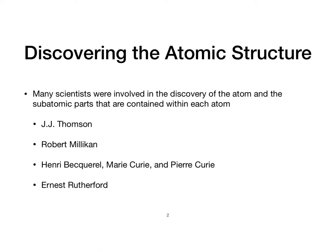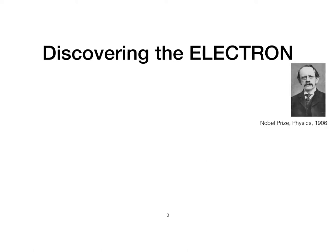Many of these discoveries were completed over 100 years ago. We know that there are electrons, but the real question is what led J.J. Thompson to discovering that there were electrons. In 1897, J.J. Thompson, shown here on the right, was a British scientist who was studying cathode rays.